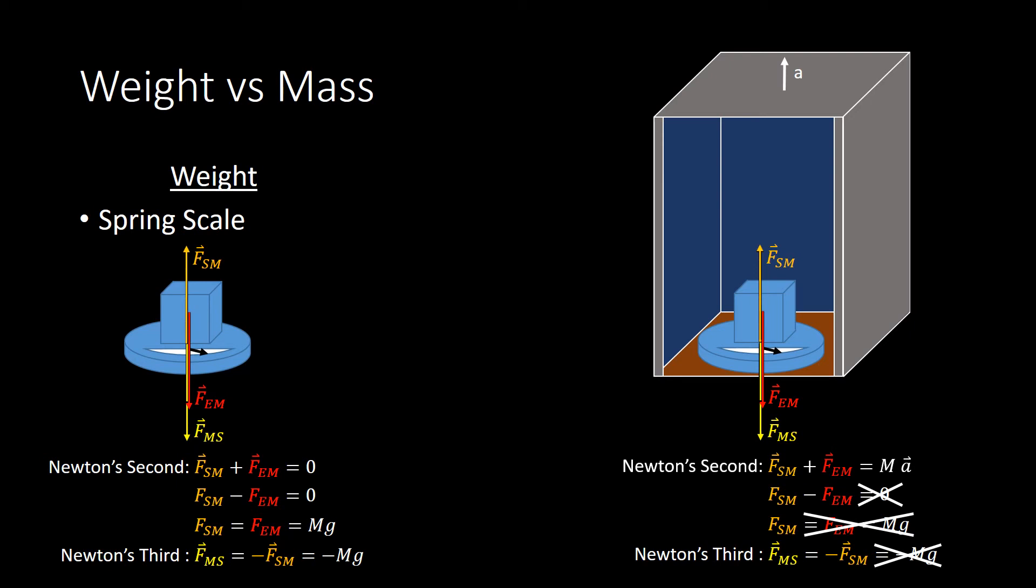Now, again, remember our choice of convention. Up will be positive, and down will be negative. So, F_sm minus F_em is equal to Ma.